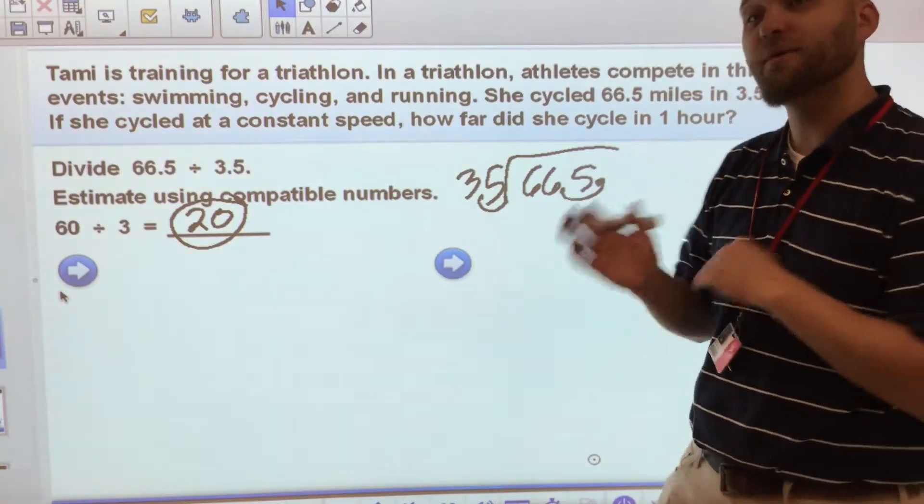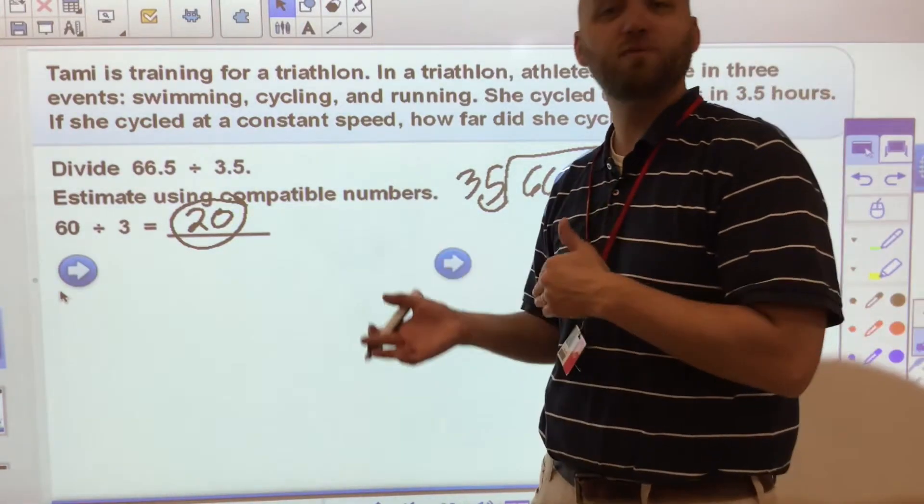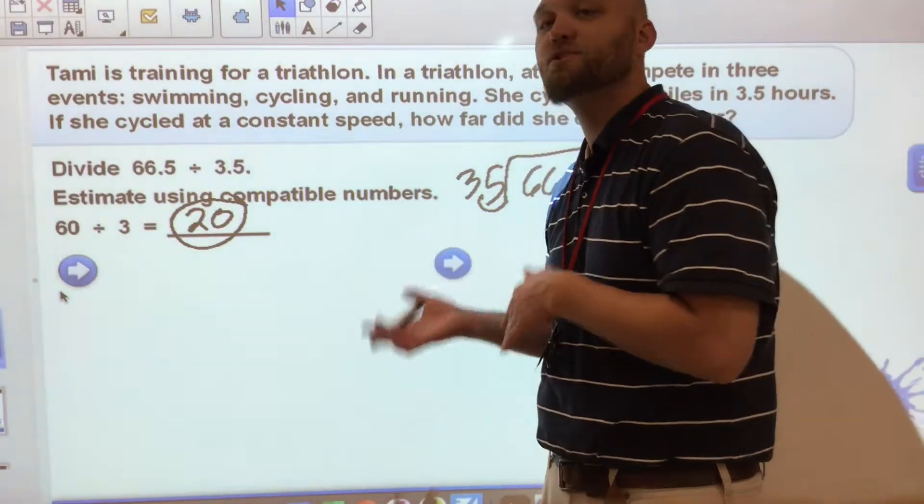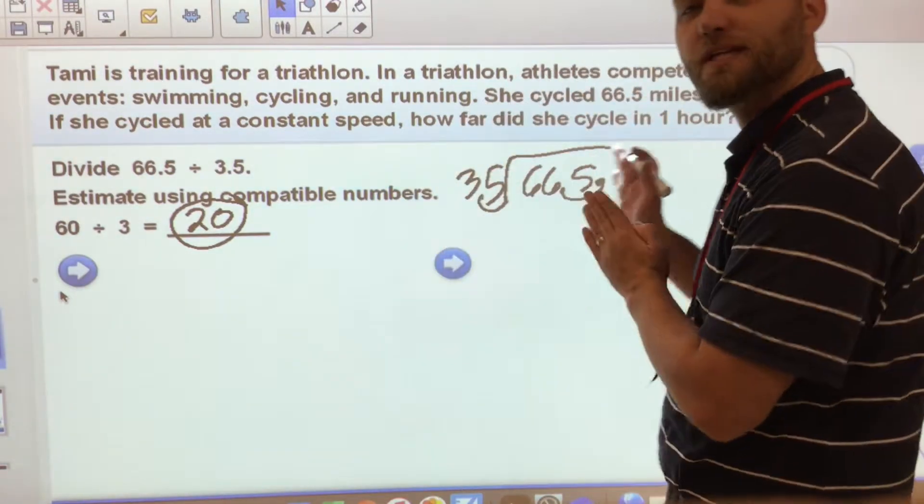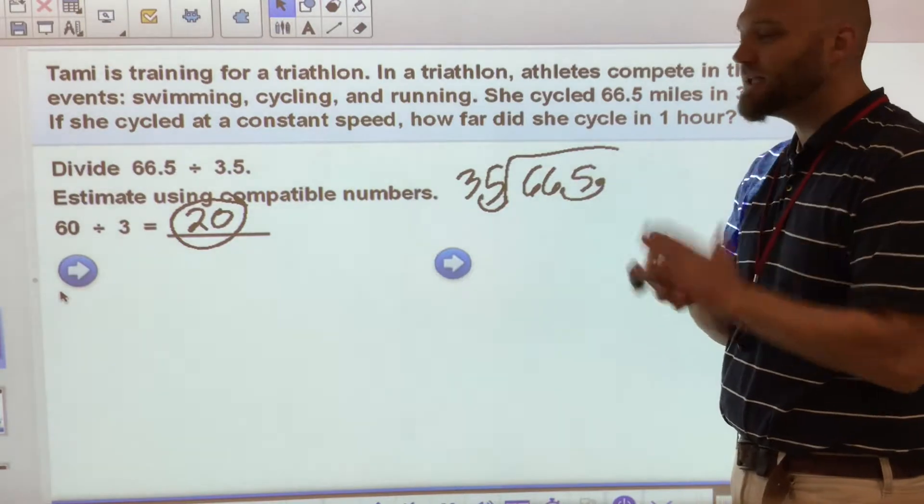Just to reiterate, 10 divided by 2 is 5. 100 divided by 20 is 5. 1,000 divided by 200 is 5. As long as I'm moving the decimal in both places, it really doesn't matter.